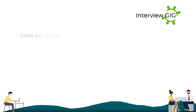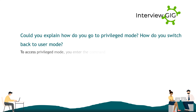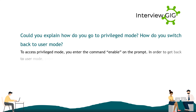Could you explain how you go to privileged mode and how you switch back to user mode? To access privileged mode, you enter the command enable at the prompt. In order to get back to user mode, enter the command disable.